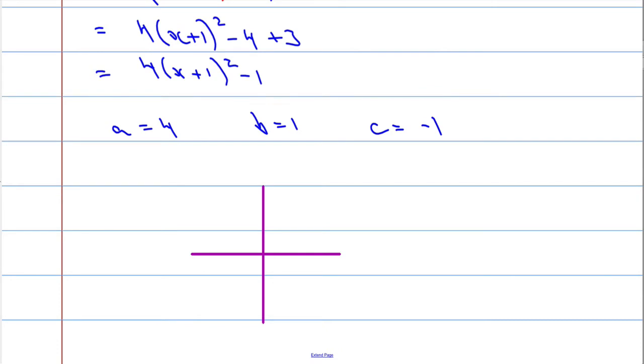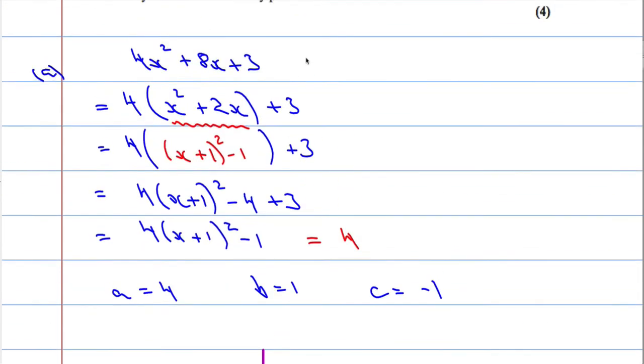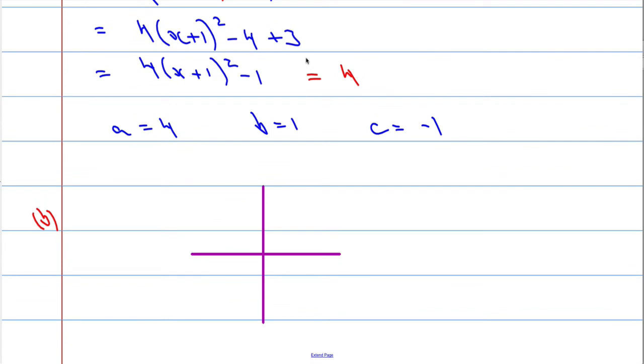OK, so let's write down what we had to begin with, 4x squared plus 8x plus 3. OK, so the first thing we know is that when x equals 0, y equals 3.